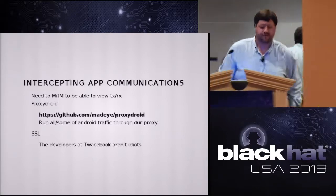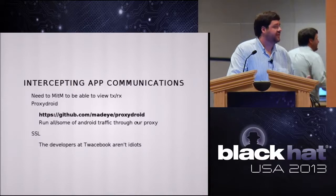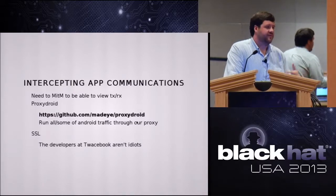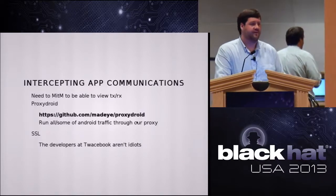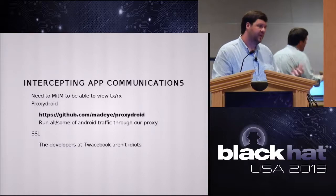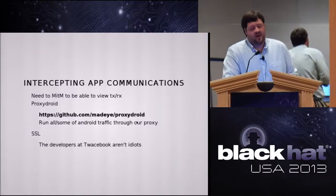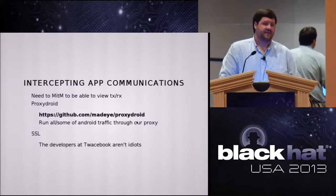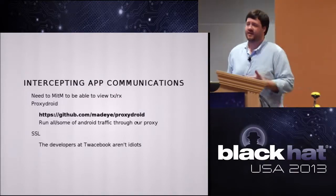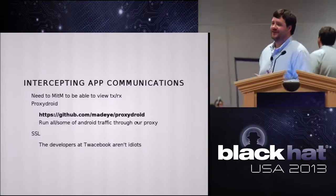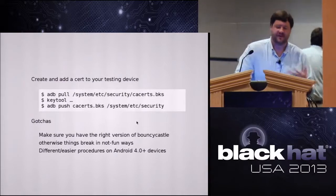The first thing we need to do is intercept these app communications. Something I found really good for that is ProxyDroid — it tends to run on most anything. We're going to look at Android for this, by the way. I didn't want to get into iOS reversing since I'd never done that. I had done a small amount of Java reversing, and I knew APKs had a lot to do with Java. We're also going to have to intercept SSL — if the apps you're targeting aren't using SSL, you can probably do anything you want anyway. That's just the baseline these days.